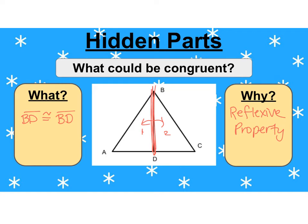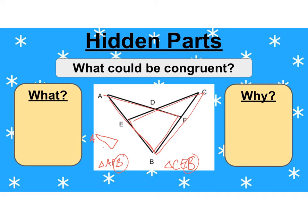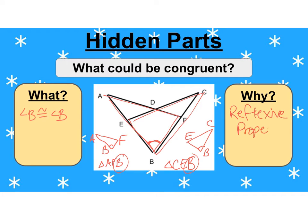The reflexive property will hide hidden sides. Here we're going to look at this picture — we've got lots of triangles. I want to look at triangle AFB and triangle ECB and see how they might be congruent. If you notice, they both have a B. So if I were to slide them apart, it would look like ABF and CBE. They both have angle B in them, so I can say angle B is congruent to angle B. The reason is the reflexive property. So the reflexive property could hide congruent sides or congruent angles.